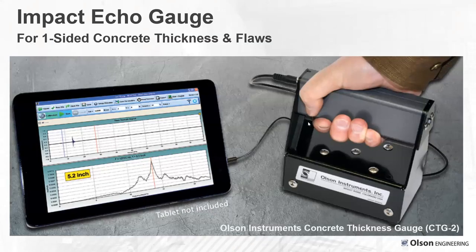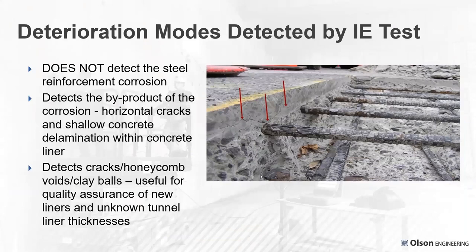Here's a handheld impact echo system, our CTG2, for measuring concrete thickness. In the time domain, you'd have a really hard time picking out the thickness, but there's a really clear echo peak at 5.2 inches in the frequency domain. What does impact echo detect? It does not detect corrosion itself, but it can detect cracking from corrosion — like horizontal cracks — as well as voids and honeycomb zones, because these change the apparent thickness. We've used impact echo for new tunnel liners for quality assurance as well as forensic investigations.